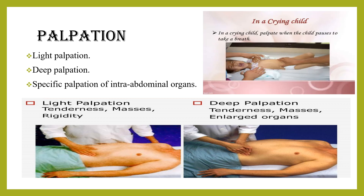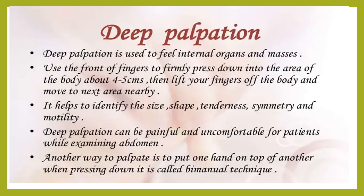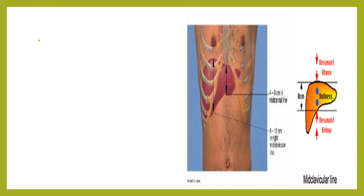We should perform light palpation, deep palpation, and specific palpations of intra-abdominal organs — specific palpation for the liver and spleen. In a crying child, palpate when the child pauses to take the next breath. Deep palpation is used to feel internal organs and masses; use the front of the fingers to firmly press down about four to five centimeters, then lift fingers off and move to the next area. It helps identify size, shape, tenderness, symmetry, and motility of a mass, though it can be painful for patients.